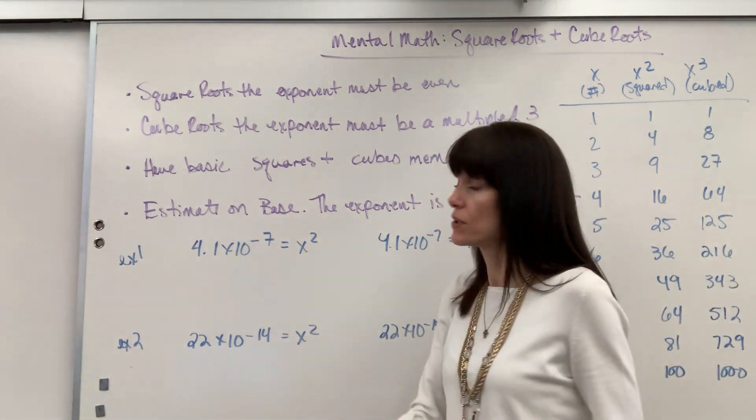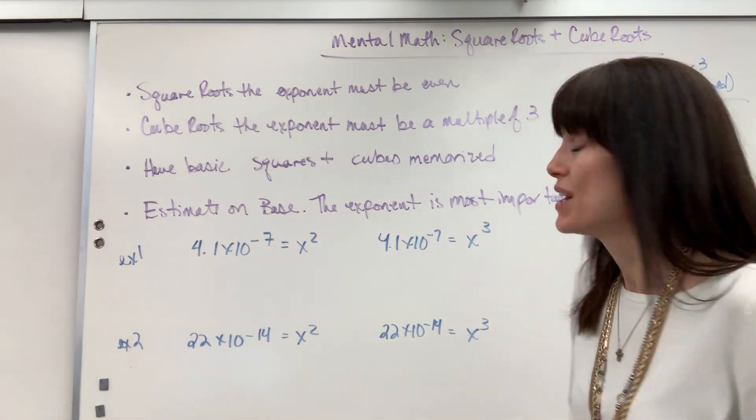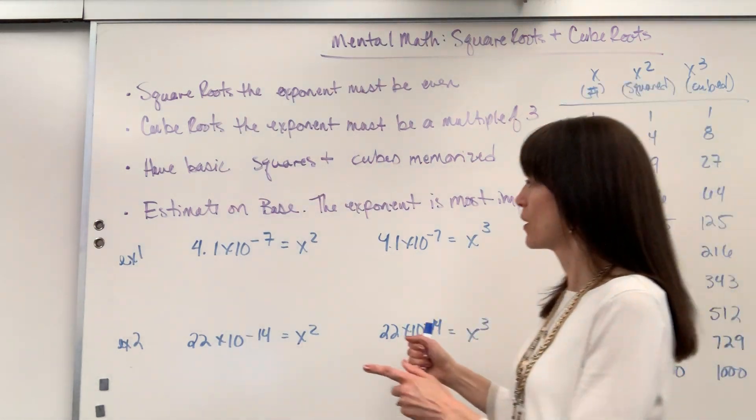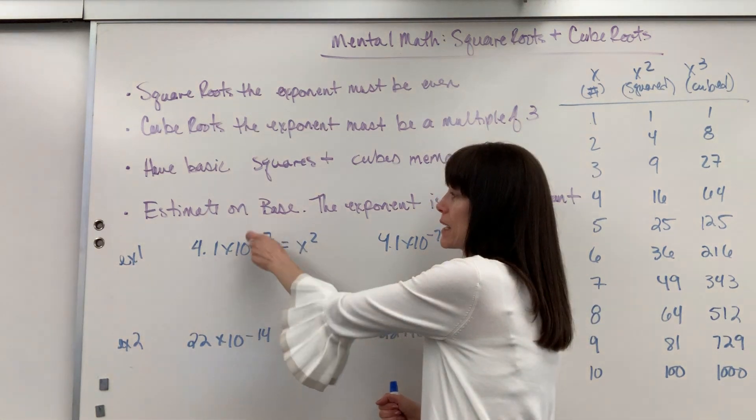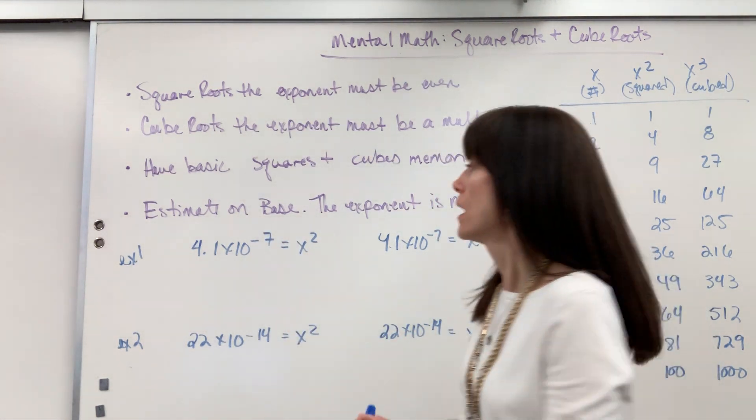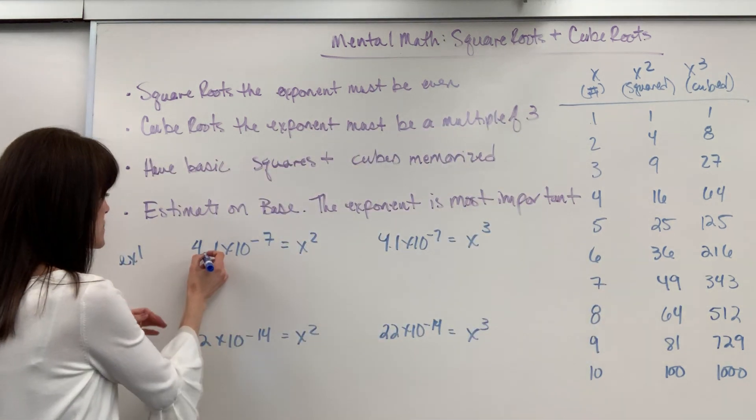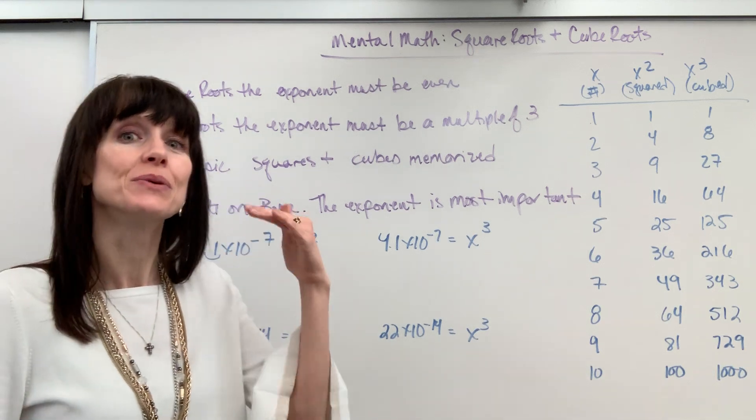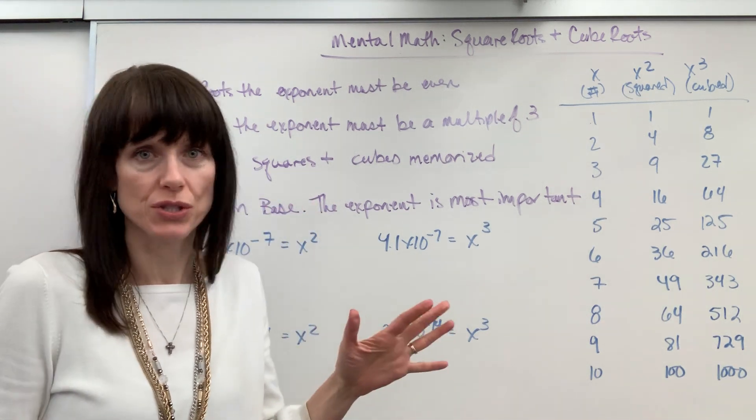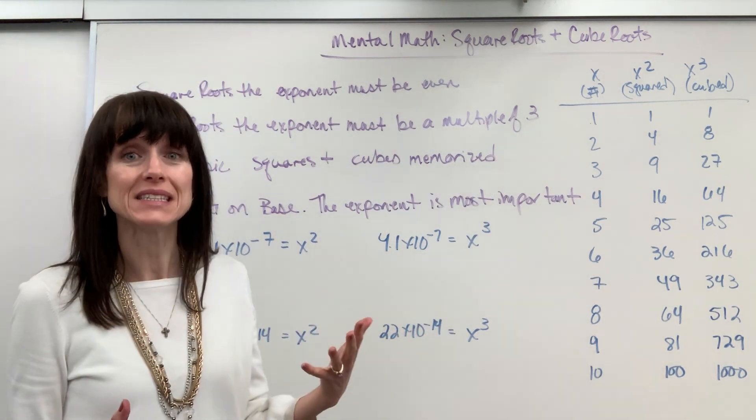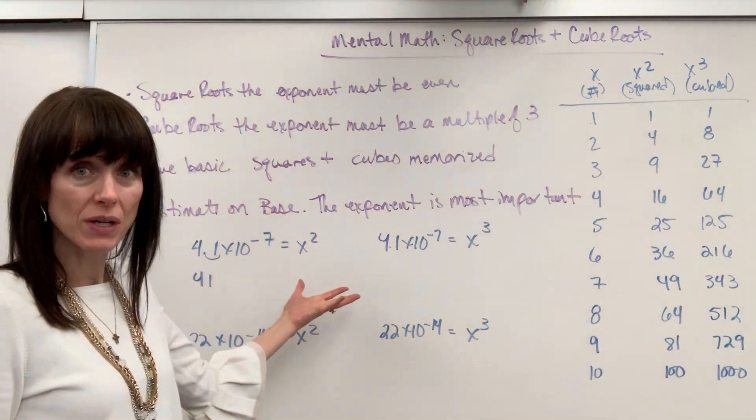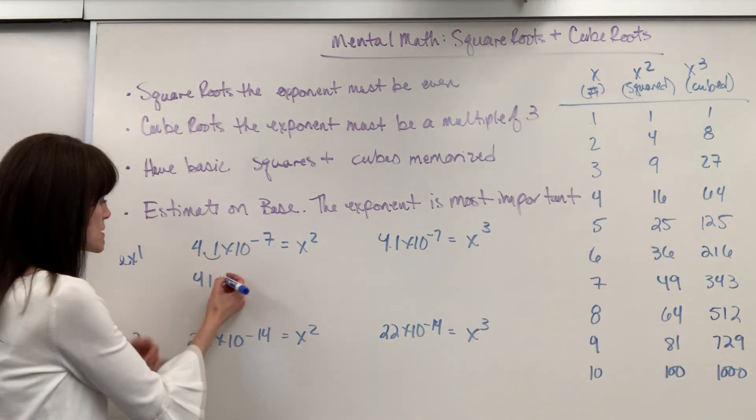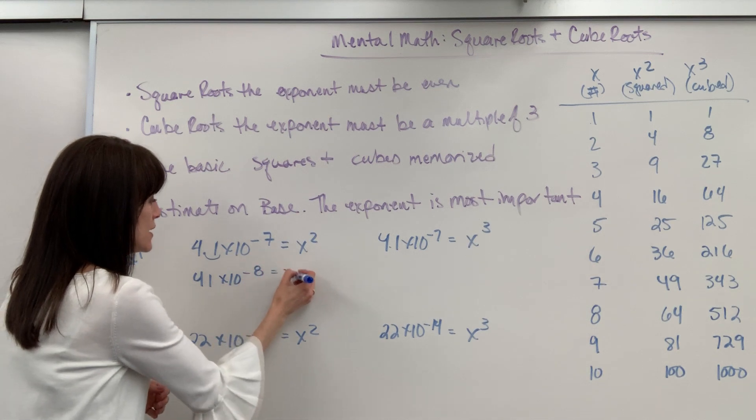So I have four examples here. What I've done is I've taken a number equal to a square and then that same number equal to a cube, so you can see how I treat them just a little bit differently. So we've got 4.1 × 10^-7 and I want to solve for x. Right now that equals x². I know I have to take the square root. Squares, I have to have an even number because I'm going to take that exponent and divide it by 2. So I'm going to move this decimal one place.